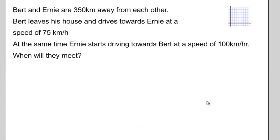Let's start with this problem. Bert and Ernie are 350 kilometers away from each other. Bert leaves his house and drives towards Ernie at a speed of 75 kilometers per hour. At the same time, Ernie starts driving towards Bert at a speed of 100 kilometers per hour. When will they meet?